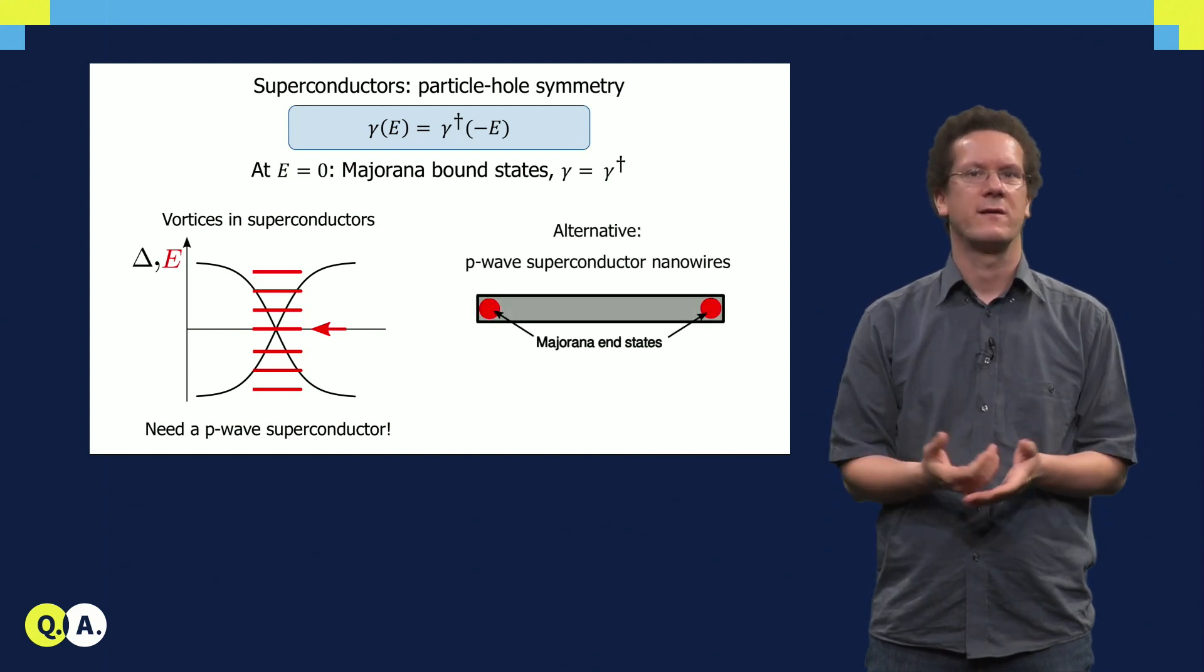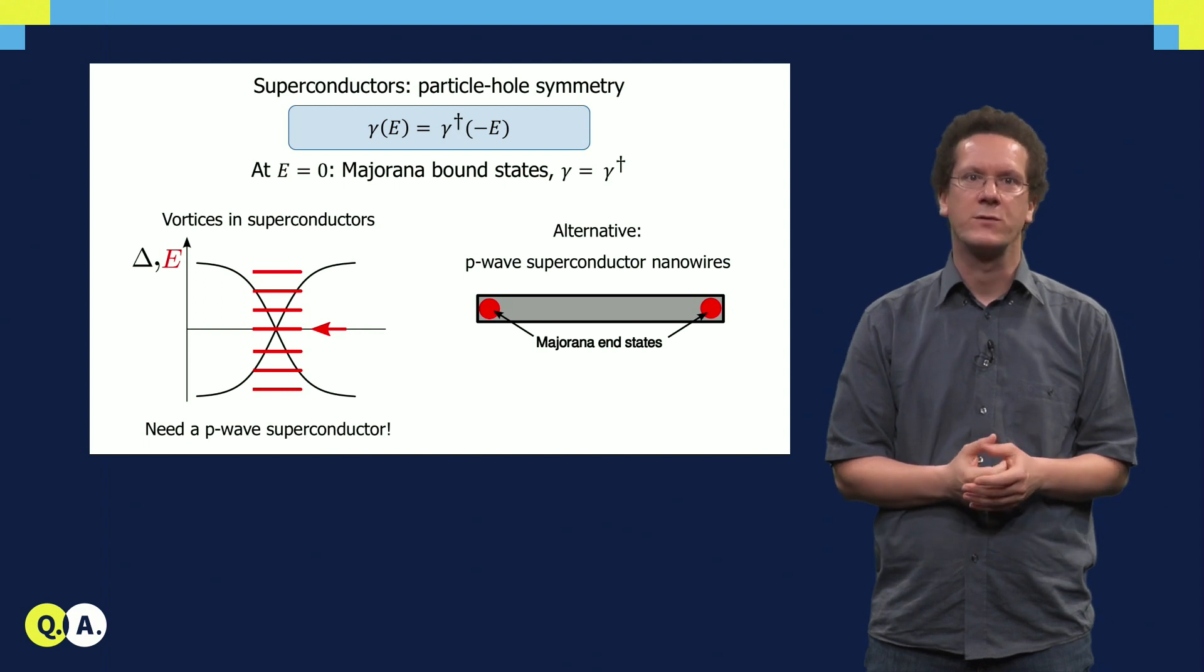It turns out that, instead of going to vortices, which are actually hard to control, you can go to one-dimensional systems, nanowires. If you make a nanowire out of p-wave superconductors, you will also get Majorana states at the ends of the wire.